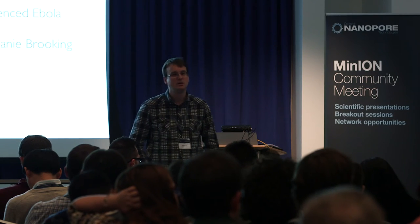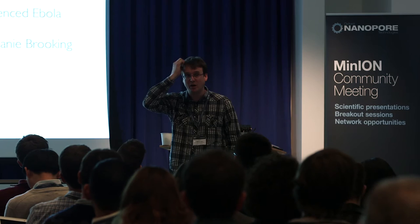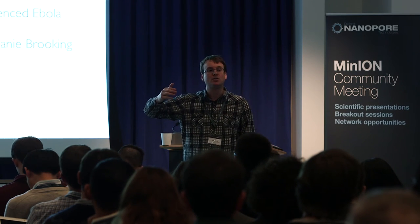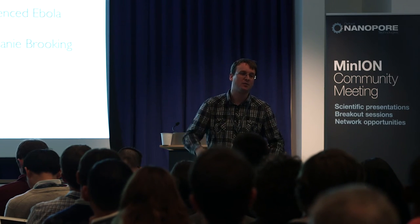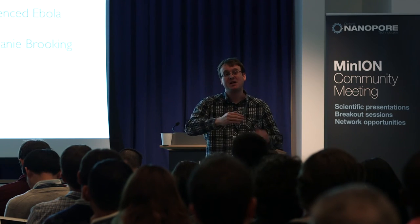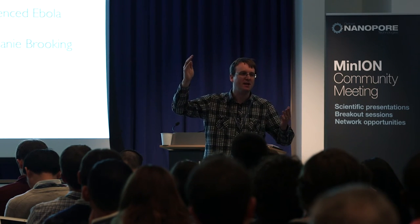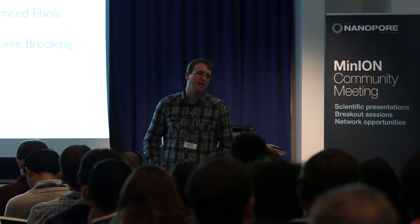Question: When you 'taste' a fragment and spit it back out, does that consume flow cell potential? Answer: No, not at all. Once you're rejecting something, you're not losing anything from the flow cell other than the time it takes to eject that read. And once you've hit the coverage target you want, you can select against that region — boosting other targets. I've been trying to look at how well that works.